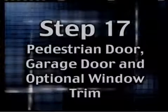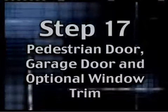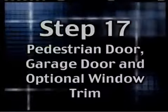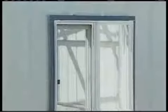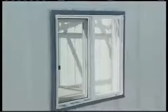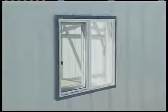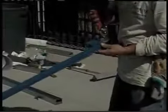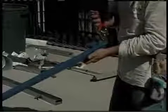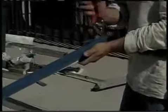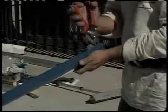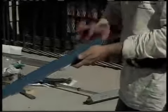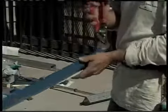Step 17: pedestrian door, garage door, and optional window trim. Assuming you ordered an optional window or windows, let's do the trim for that first. On both the door and the window trim, we're only going to be cutting the trim. After we do this, just put the pieces aside with your door and window, and after we get the side panels on, we go back and put on the trim pieces.